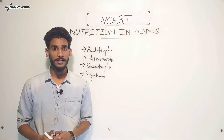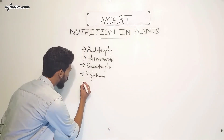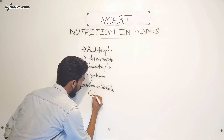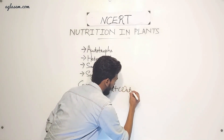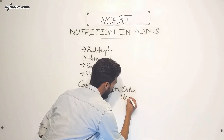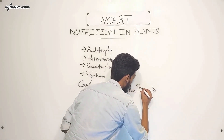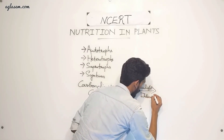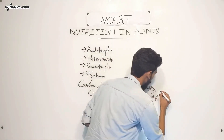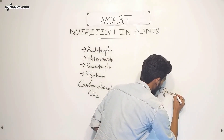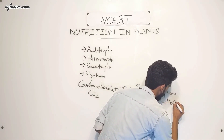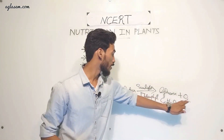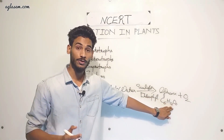In the process of photosynthesis, carbon dioxide (CO₂) reacts with water (H₂O) in the presence of sunlight and chlorophyll to give glucose (C₆H₁₂O₆) and oxygen. The oxygen is released into the air and the glucose is utilized by the plant or autotrophs for their food.